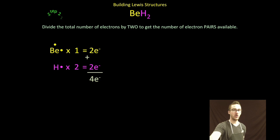Step two, determine the total number of valence electron pairs. Just take your total number of valence electrons, divide by two. I've got two pairs of valence electrons.